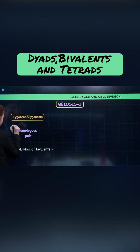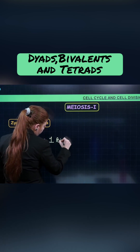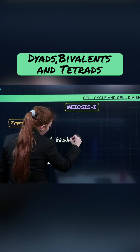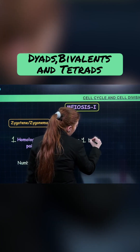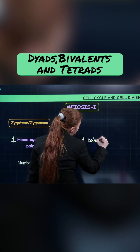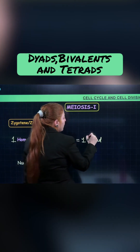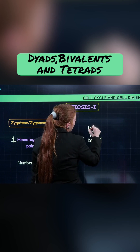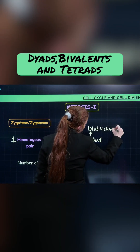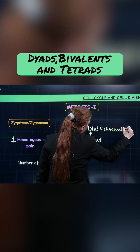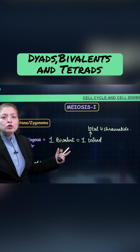One homologous pair is called as one bivalent and we can also call it as one tetrad. Bivalent naam pada hai that it consists of two chromosomes, and one pair has got total four chromatids, therefore tetrads. So tetrad naam number of chromatids pe pada hai, aur bivalent number of chromosomes pe pada hai.